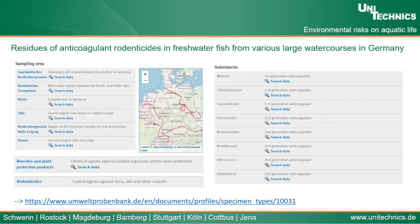Another research focused on the environmental risks of anticoagulants on aquatic life — titled Residues of Anticoagulant Rodenticides in Freshwater Fish from Various Large Water Courses in Germany. The website of this research is provided, and several sampling areas are shown, including the Rhine River, the Danube River, and the Elbe. Under the menu you can find biocides and plant protection products, which includes rodenticides.